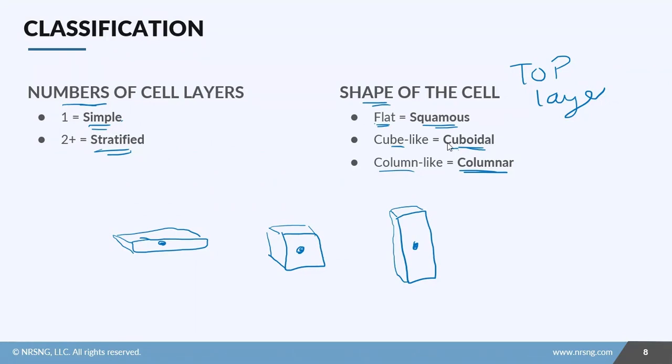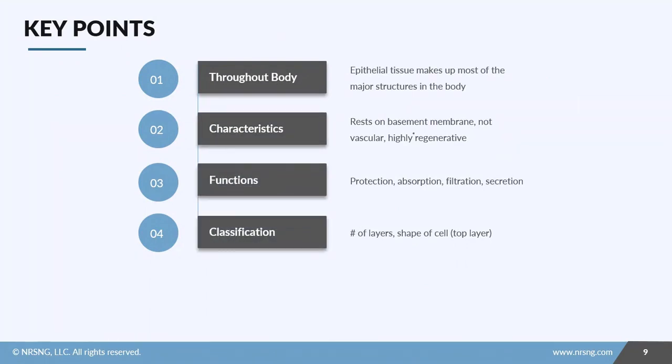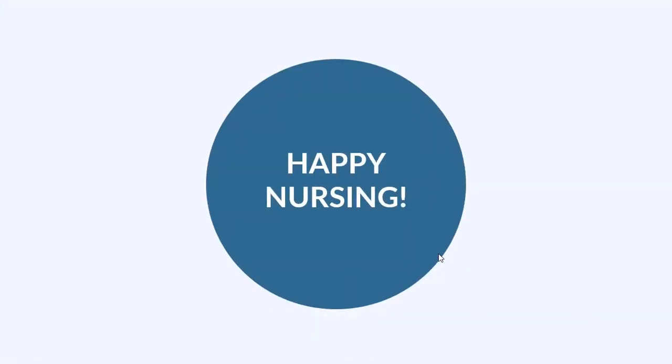Let's recap really quick. Epithelial tissue makes up most of the major structures in the body. It rests on a basement membrane which connects it to an underlying connective tissue. This is important because it usually doesn't have blood vessels and it needs to get those nutrients from the vessels in the connective tissue. Remember that it's highly regenerative. The four main functions of epithelial tissue are protection, absorption, filtration, and secretion. We classify it by the number of layers and the shape of the cell in the top layer.